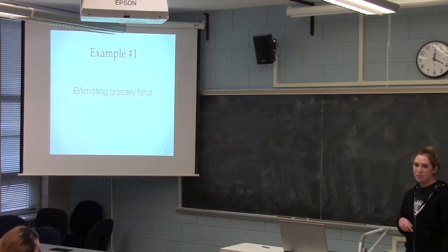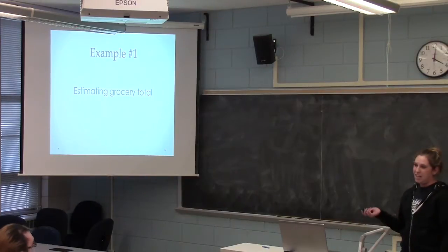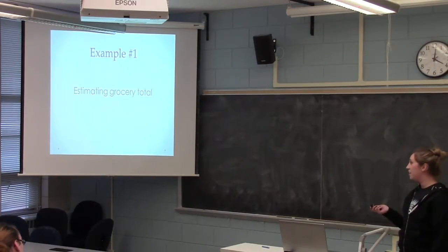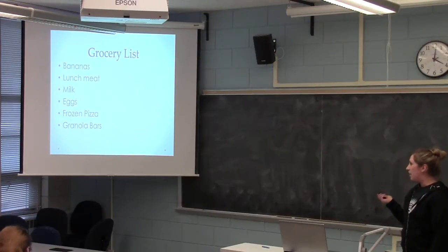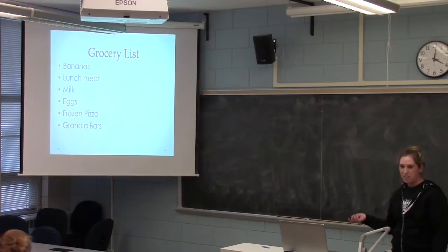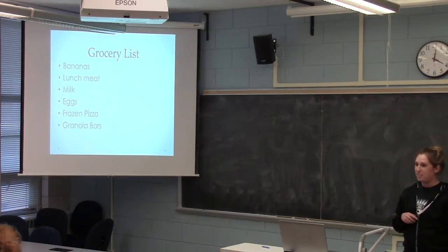A good example is going to the grocery store. As a college student, we generally have a rough estimate of what we should be spending as we walk in the door, and we don't really want to go over that. So let's say a simple grocery list of bananas, lunch meat, milk, eggs, maybe some frozen pizza, and some granola bars.